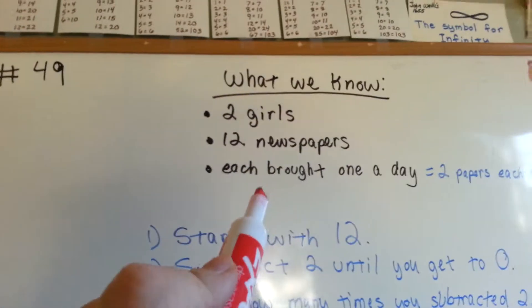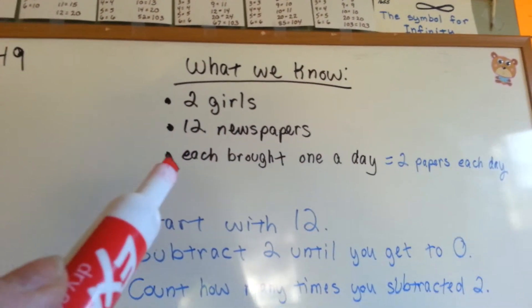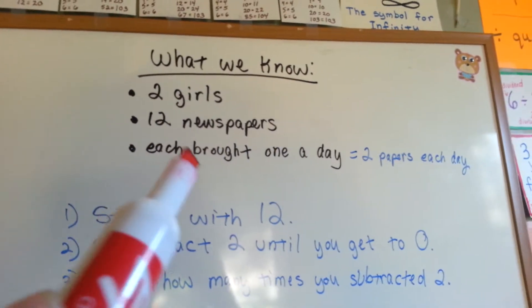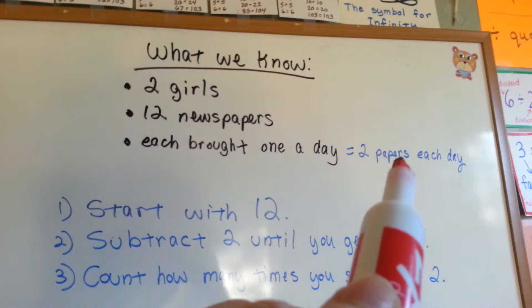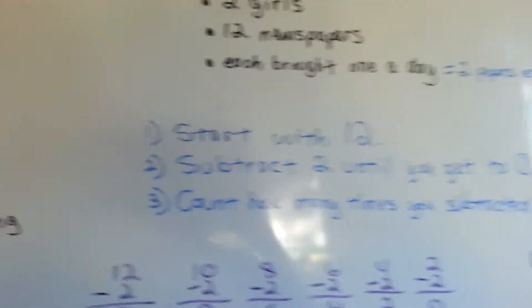So this is what we know. There's two girls, there's 12 newspapers, and each brought one a day. So because there's two girls and they each brought one, that means two papers a day were brought to the school, okay?